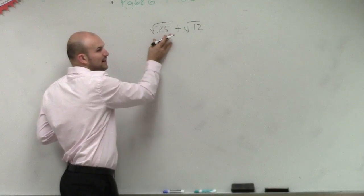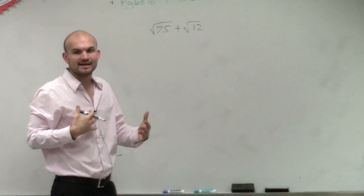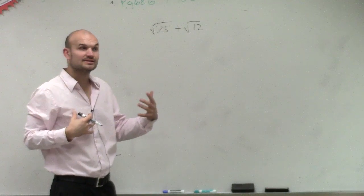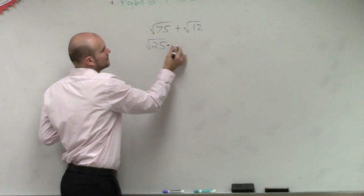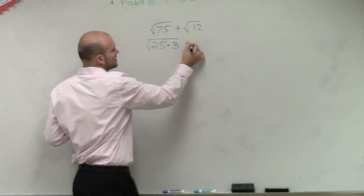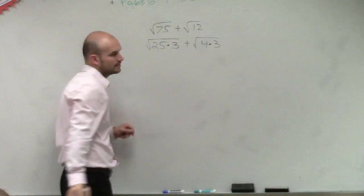So what I want to do is I want to try to break apart this. I can't take the square root of 75, so I want to rewrite it with numbers that I can take the square root of. So I can rewrite this as 25 times 3, plus I can rewrite the square root of 12 as 4 times 3. Right?